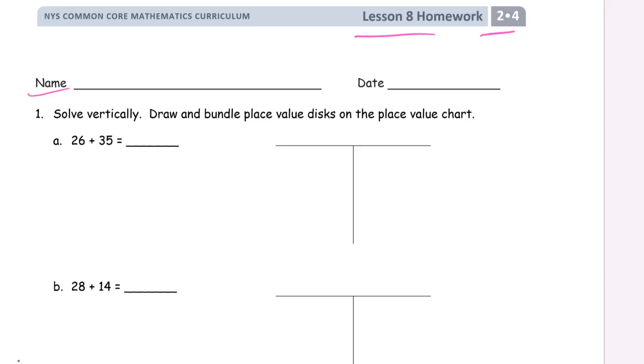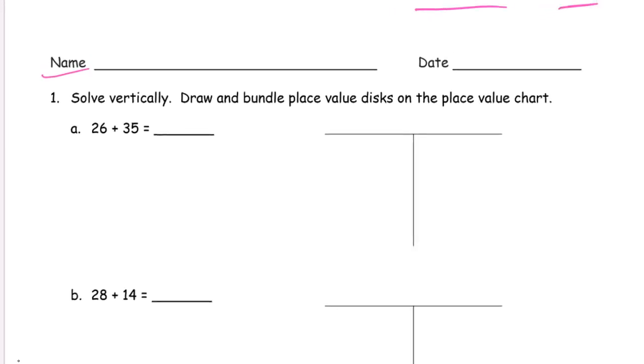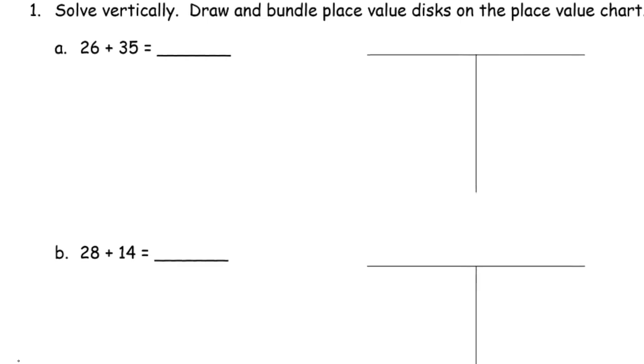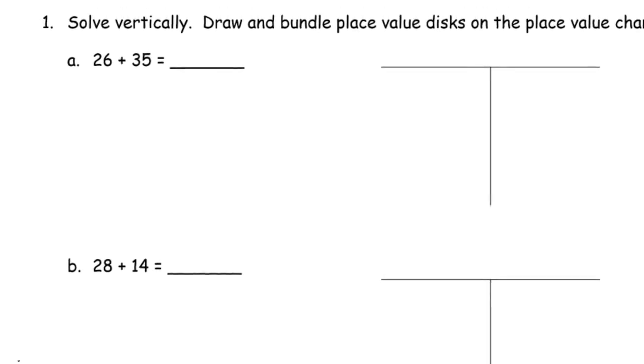We're solving vertically and drawing and bundling place value disks on the place value chart. Now by now, most second graders are really comfortable using the place value chart and drawing the place value disks, and what they'll tend to do in this assignment is draw the disks and then just write down the vertical answer without actually doing the vertical math. So for that reason, I highly recommend doing the vertical method first and then drawing the place value disks.